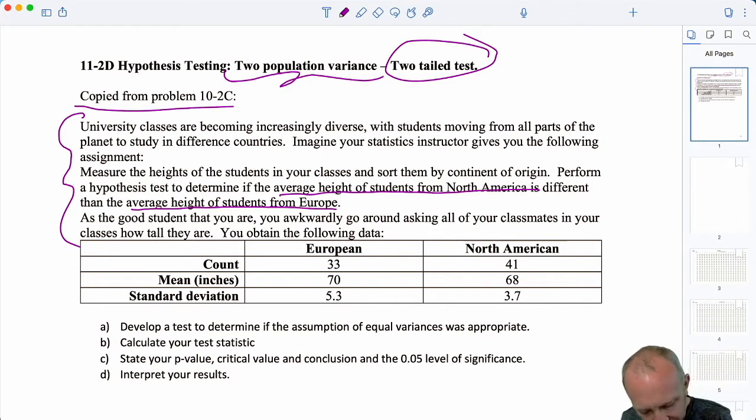Here now we're asked to develop a test to determine if the assumption of equal variances was appropriate. So of course when we're doing those two population t tests we have to make an assumption about what do we know about the population variance. If we assume that they're equal or not equal that influences how we calculate the standard error and that influences how we calculate degrees of freedom.